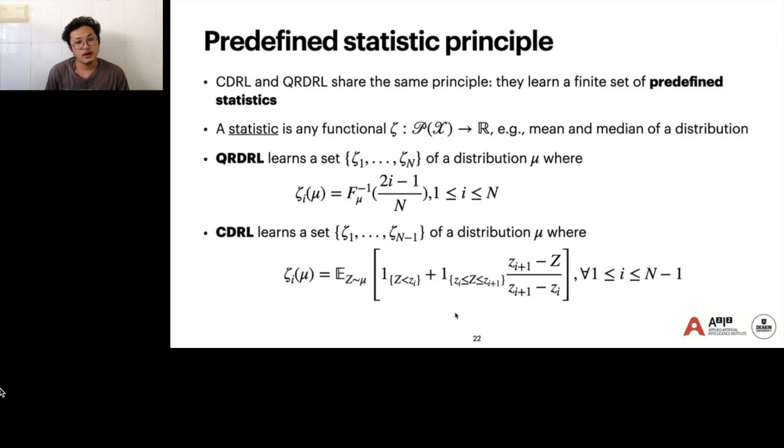So despite having many different distributional reinforcement learning methods, they all share the same principle: they learn a finite set of predefined statistics. A statistic is formally a functional from distribution, functional from space of distributions to scalar values. For example, the mean and median of the distribution is a statistic. QRDRL learns a set of N statistics of a distribution μ, which is the quantile values at N specific quantiles. CDRL learns a set of N-1 statistics of a distribution μ, which is the expectation of some piecewise linear function.